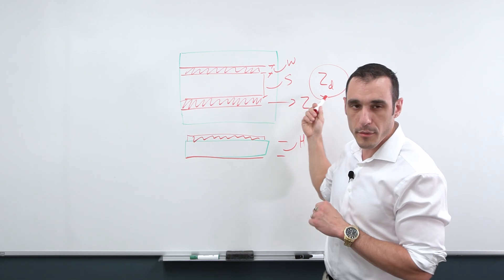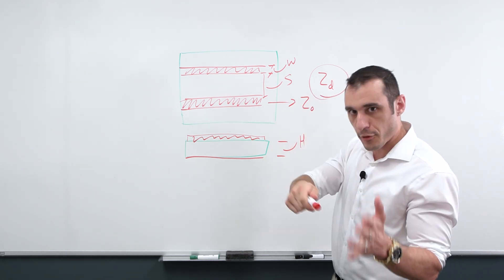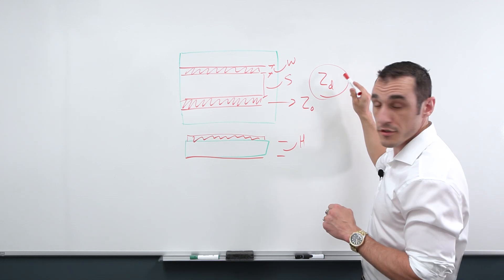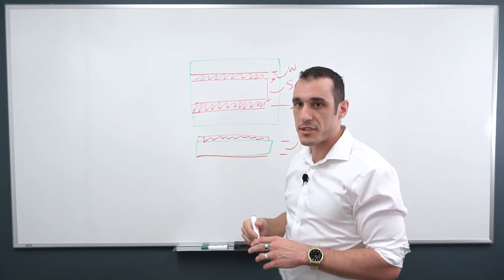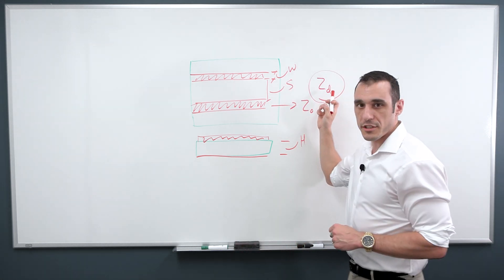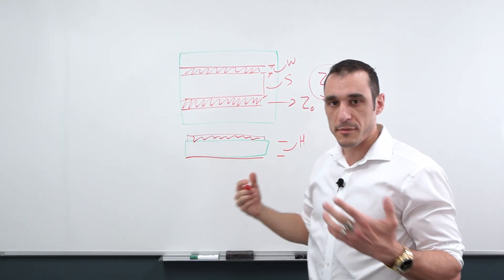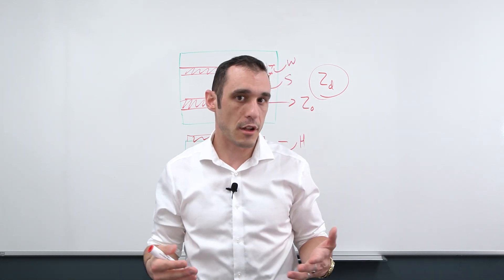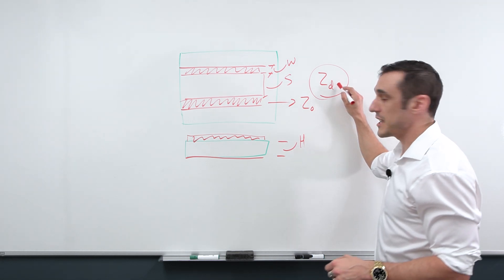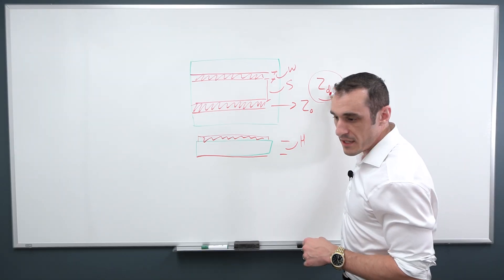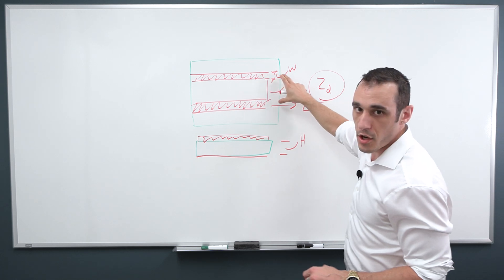There aren't really any good formulas that you can derive from first principles to get an equation for Z sub D. However, there are a lot of different calculator applications out there that can pretty reasonably determine this to some level of accuracy. If you're in something like Altium Designer, it'll have a field solver built into the layer stack manager that you can use to calculate this directly. Z sub D is the impedance that the signal sees when it's traveling along these two traces.